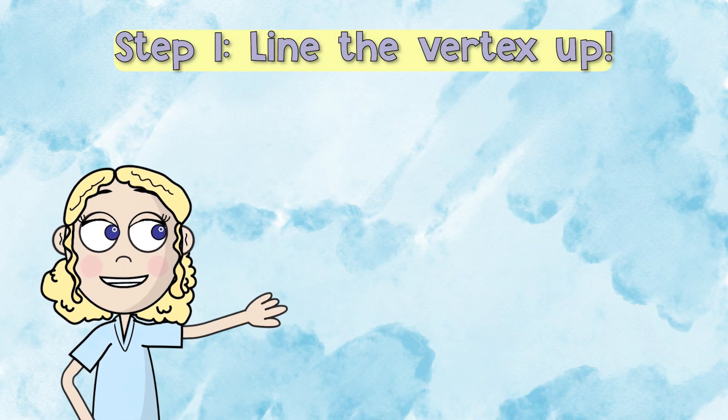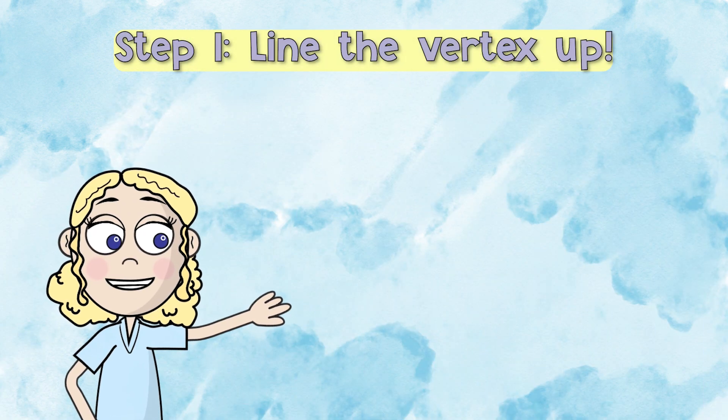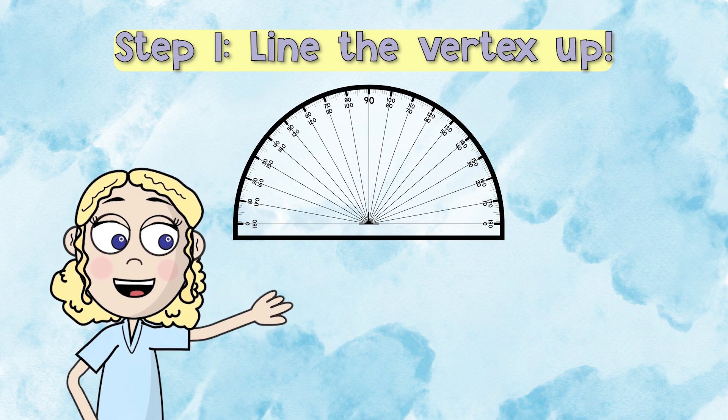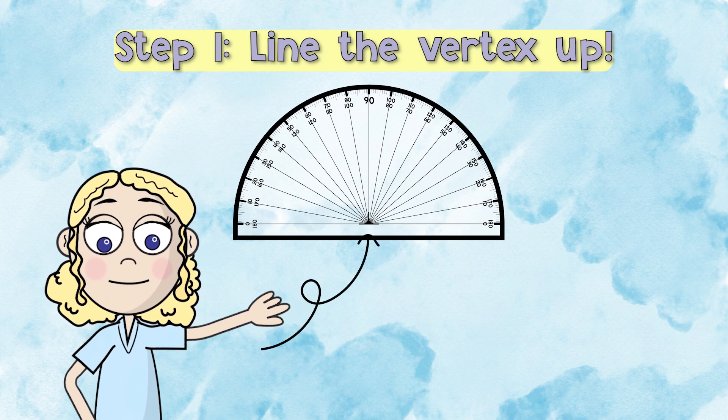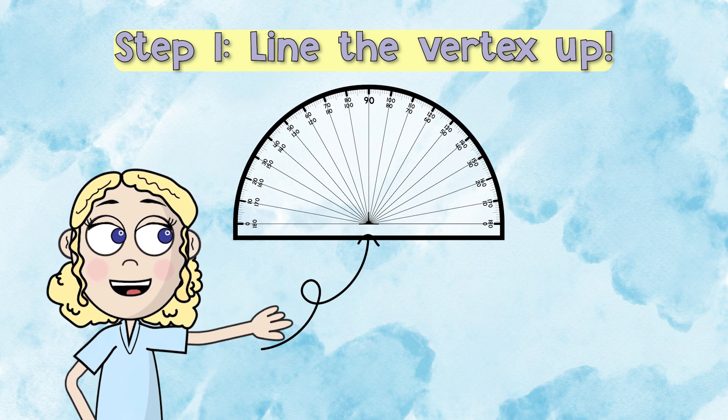Step one, you are going to put the whole circle or dot on your protractor so that it's lined up with the vertex. This might also look like a little upside down T.